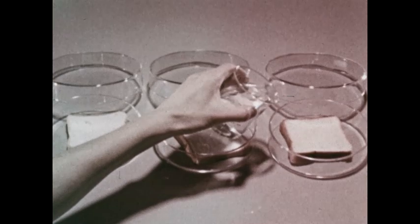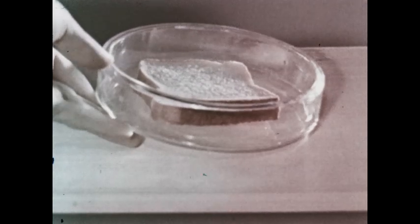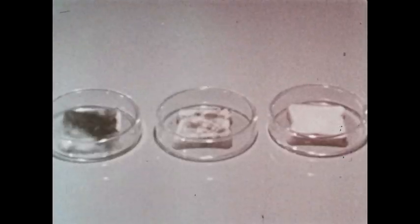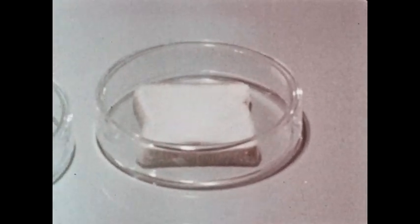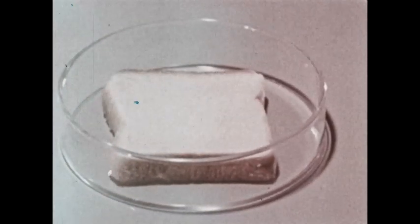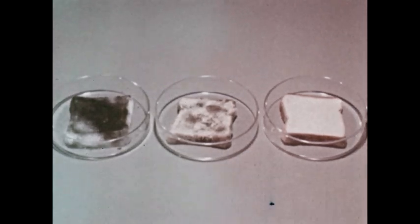But is dampness the only condition which affects the growth of molds? Let's do another demonstration. One of the moist slices is placed in a refrigerator. Another is left out on a shelf at room temperature. A third is placed in a warming oven. After three days, the bread slices look very different. The one which was left in the refrigerator still seems fresh. There is no visible trace of mold here. The bread which was left at room temperature is moldy. But the slice which was left in the warming oven is covered with mold. So temperature too seems to have an effect on the growth of mold.